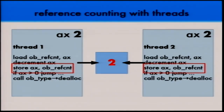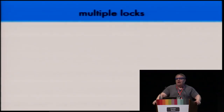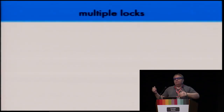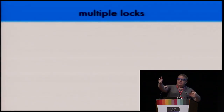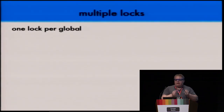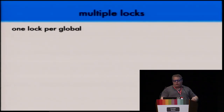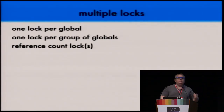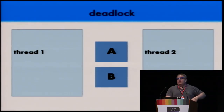To prevent this in a multi-threaded Python, one approach is to add locks around everything. A lock is like a bouncer — it only lets one person use a resource at a time. We could put a lock around every global, or group related globals together. We'd also need at least one lock for reference counts. But with multiple locks, you get a special kind of race condition called a deadlock.